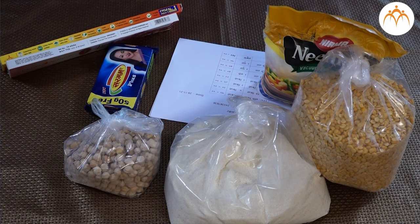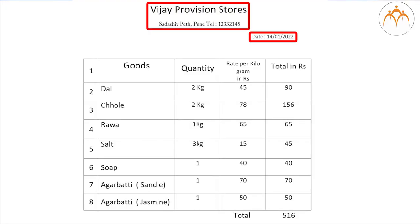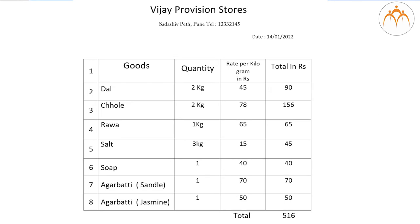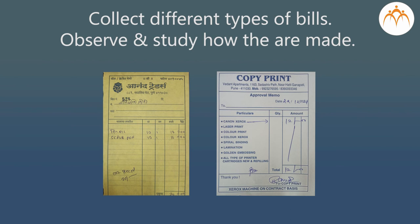We must check the total. Dada, should I make a bill? I'll tell you the list of items and their respective prices. What we learned: when we shop or purchase from a shop, or eat from a hotel, we pay the bill. The bill tells us how much to pay. The name of the shop, its address and date are written on the bill. The list of items is written to the left and the respective price to the right. At the end of the list the total price is written. Activity: collect different types of bills, observe and study how they are made.